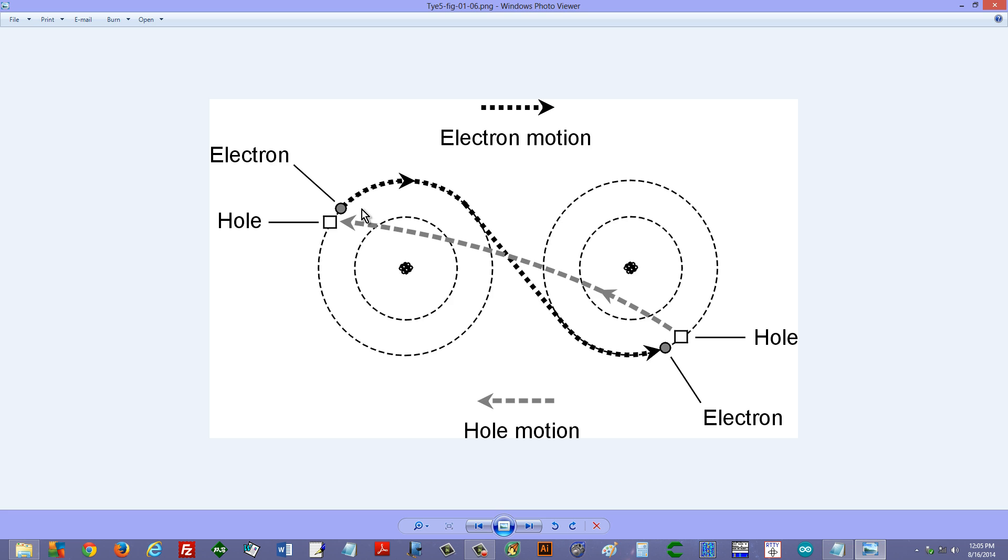Every conductor or semiconductor has both electron flow or electron movement and hole movement. However, in an N-type semiconductor, most of the charged carriers are electrons, and in a P-type semiconductor, most of the charged carriers are holes. And that gives them greatly differing characteristics.